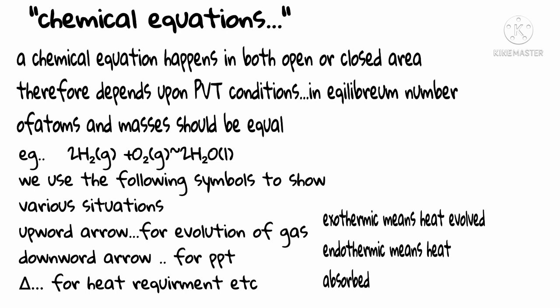We use the following symbols to show various situations. Upward arrow for evolution of gas. Downward arrow for precipitate. Delta for heat requirement, etc.